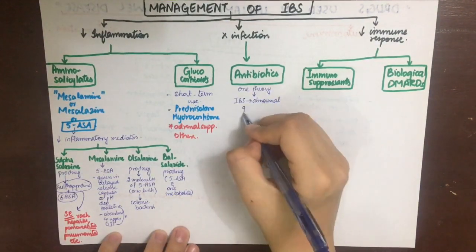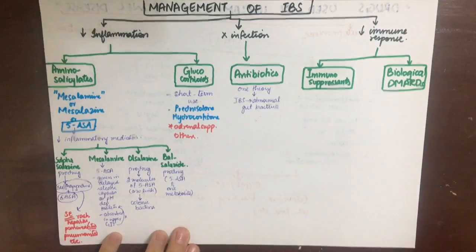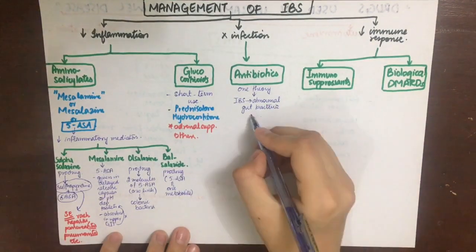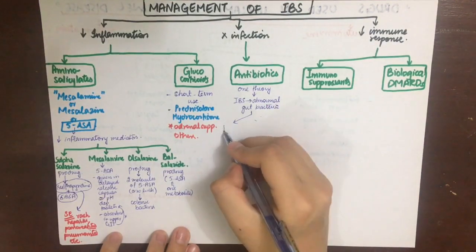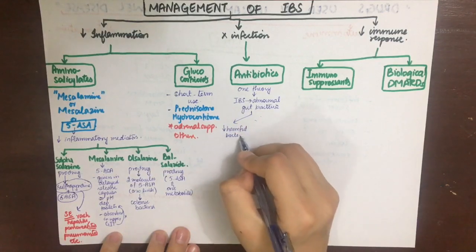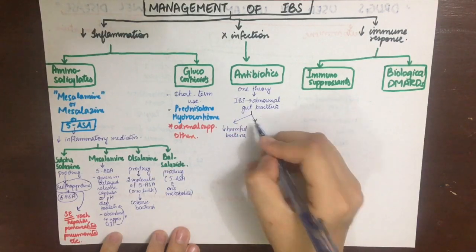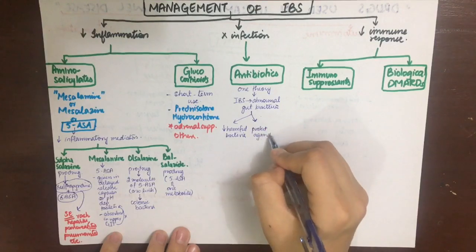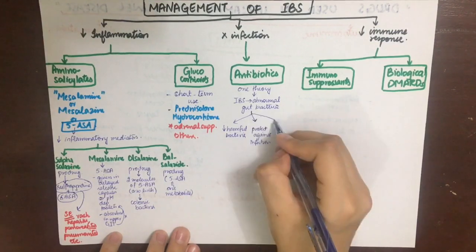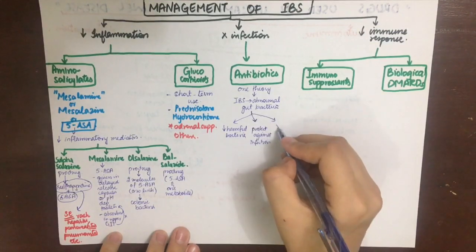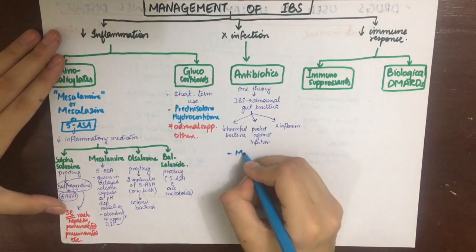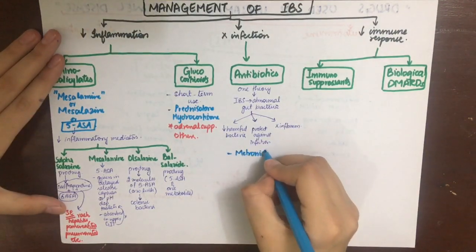We use antibiotics because one theory regarding IBD is that it can result from an abnormal balance of colonic bacteria. Antibiotics are given to decrease harmful bacteria, protect the gut wall from infection, and decrease the inflammatory response to infection. The main antibiotics used are metronidazole, clarithromycin, and ciprofloxacin.